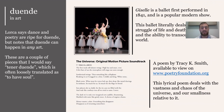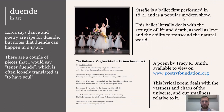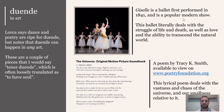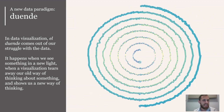Lorca says dance and poetry are ripe for Duende, but notes it can happen in any art form. Two pieces I'd say capture Duende are the ballet Giselle, first performed in 1841, which deals with the struggle of life and death, love, and the ability to transcend the natural world. The other is Tracy K. Smith's poem 'The Universe as Original Motion Picture Soundtrack' — a lyrical poem found on poetryfoundation.org that deals with how big and chaotic our universe is, and how small we are within it.